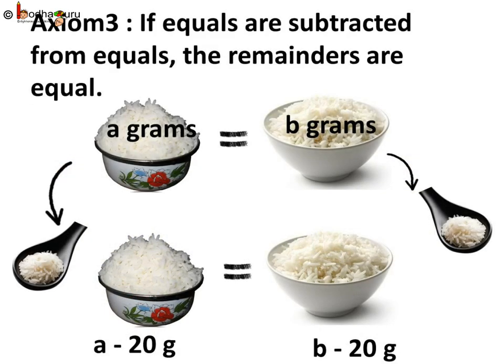Euclid also said: if equals are subtracted from equals, then the remainders are equal. Now, these two bowls have the same amount of rice. And if we take away 20 grams of rice from each bowl, then still both would contain the same amount of rice. That is, equals were subtracted from equals and they remain equal. We don't need to prove this — it's the basic truth.